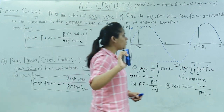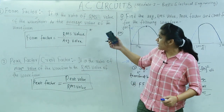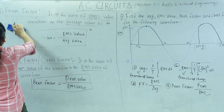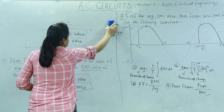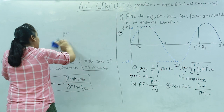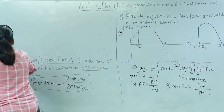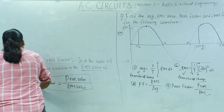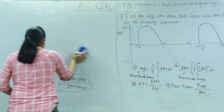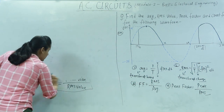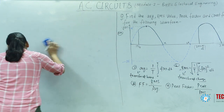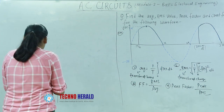I hope you have copied the definitions. If you have not copied yet, pause the video and copy now. These kinds of small problems based on average value and RMS value — you have to only calculate average and RMS value. After that, form factor and peak factor are straightforward — you just divide them. Peak value is always given in the question most of the time, so the main calculation is only for RMS value. After that you can easily calculate form factor and peak factor.